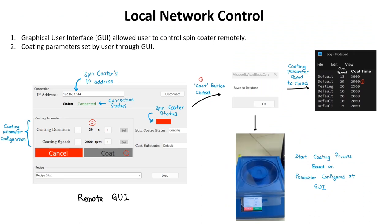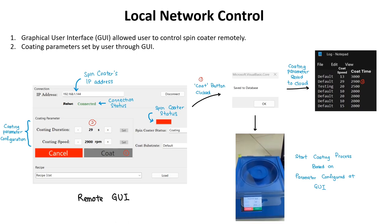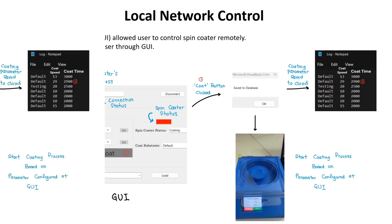The GUI allows the user to control the spin coater remotely within the same network. Other than that, it can also access the database. Users can configure the coating parameters through the GUI. Once the user clicks the coat button, the parameters will be saved into the database and the coating process will start.